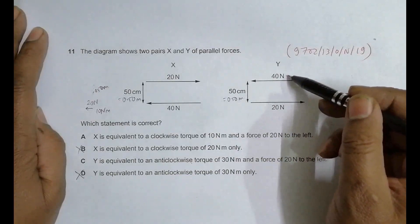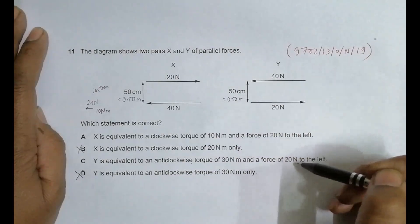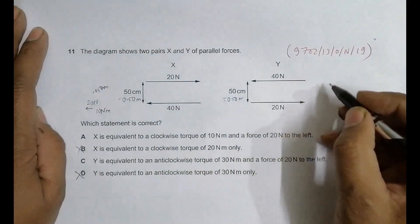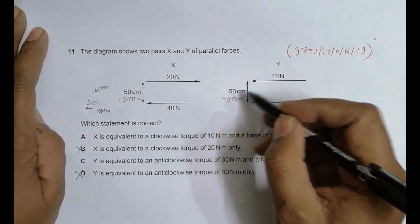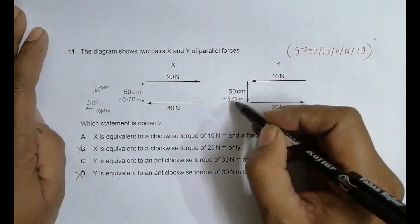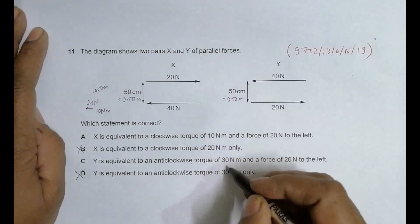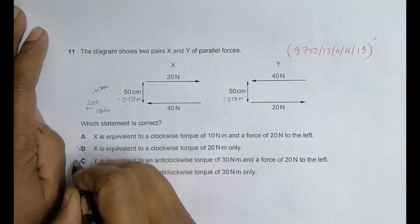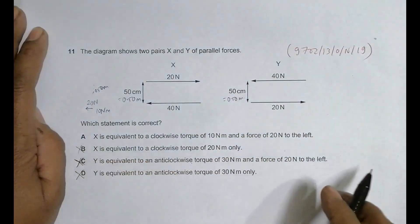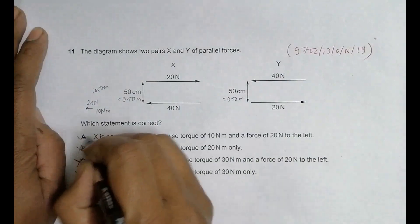The resultant force is 20 Newtons to the left, and this gives us a turn somewhat like this. This is 50, this is 20, so 20 times 0.5 equals 10, not 30, so it is incorrect. The only correct choice is choice number A.